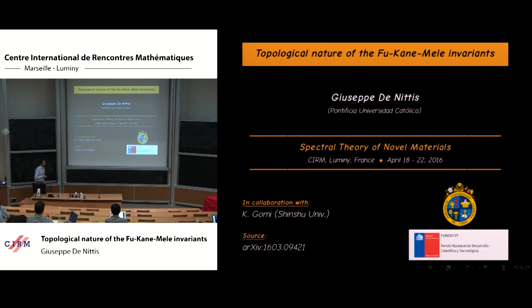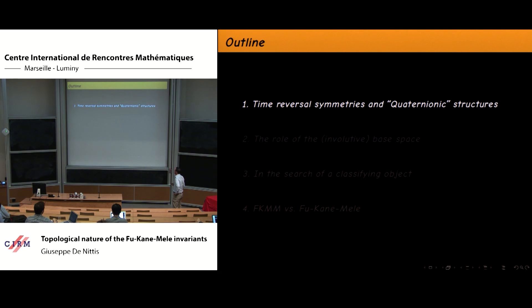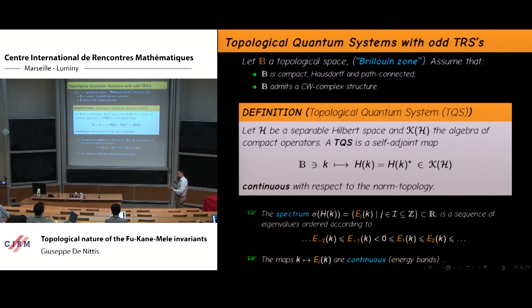I will try to present this result in as simple a way as possible, but at the end of the day I also have to introduce some technicalities. Let me start speaking about time reversal symmetry and the induced quaternionic structure in this kind of problem, which comes from a typical problem in condensed matter. I prefer to start from the mathematical formulation of the problem and then eventually explain which kind of models are represented by this type of theory.